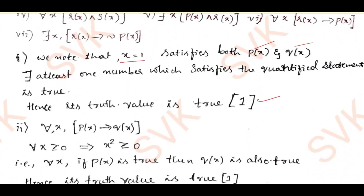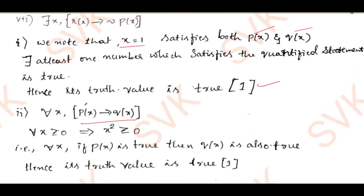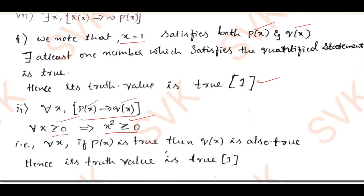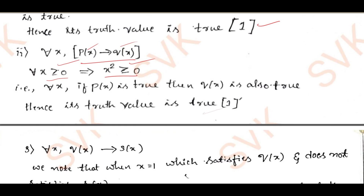Next, for all x, p(x) implies q(x). p(x) is positive for all values; q(x) means squares of all values are positive. For all x ≥ 0, squaring both sides gives x² ≥ 0. Therefore p(x) is true and q(x) is true. So the given proposition has truth value true, or 1.